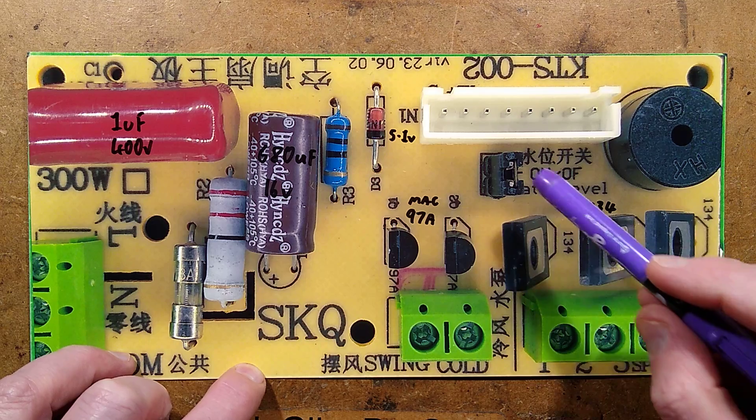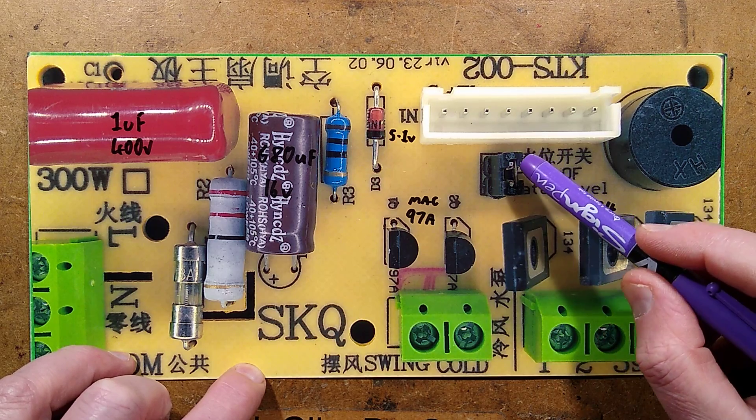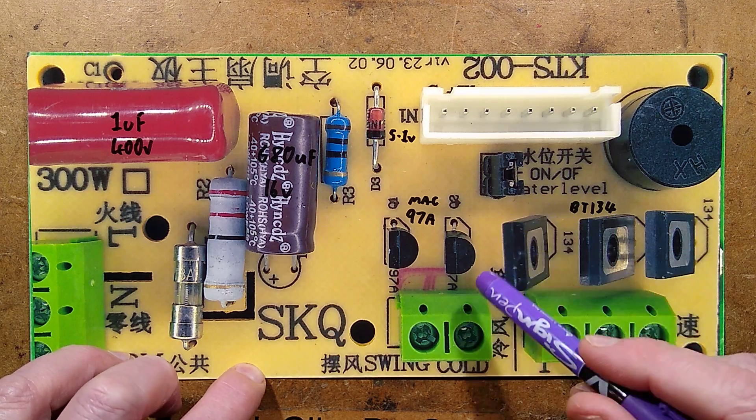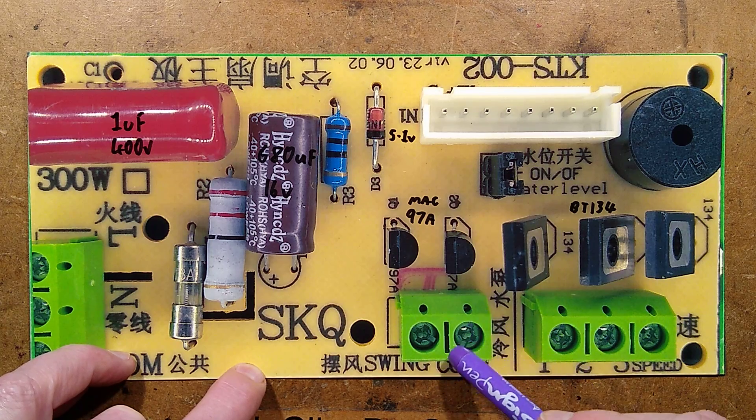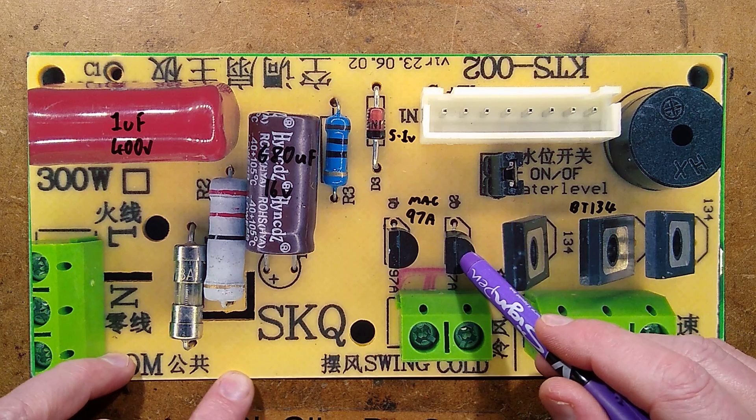There's also a little beeper. This little link here is either bridged out if it's not used, or I think you can put a float switch there to control the pump, and all it does is break the feed to the triac.